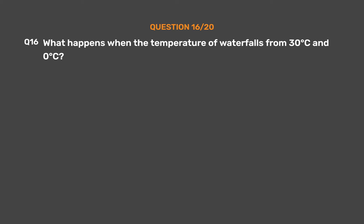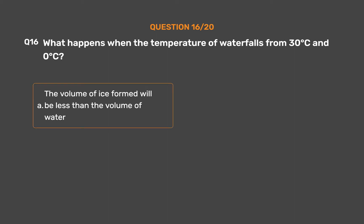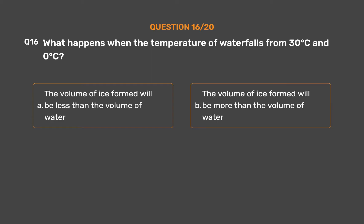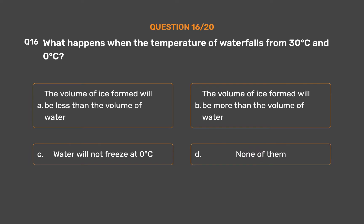Question number 16. What happens when the temperature of water falls from 30 degrees Celsius to 0 degrees Celsius? Option A: The volume of ice formed will be less than the volume of water. Option B: The volume of ice formed will be more than the volume of water. Option C: Water will not freeze at 0 degrees Celsius. Option D: None of them. The correct answer is Option B, the volume of ice formed will be more than the volume of water.